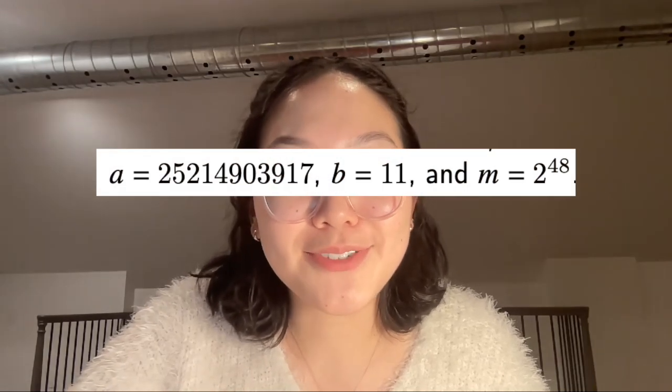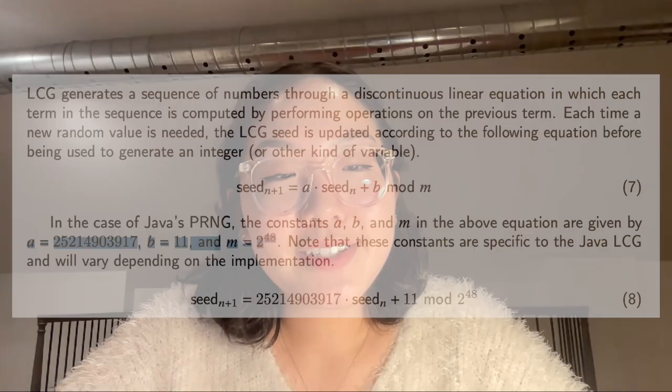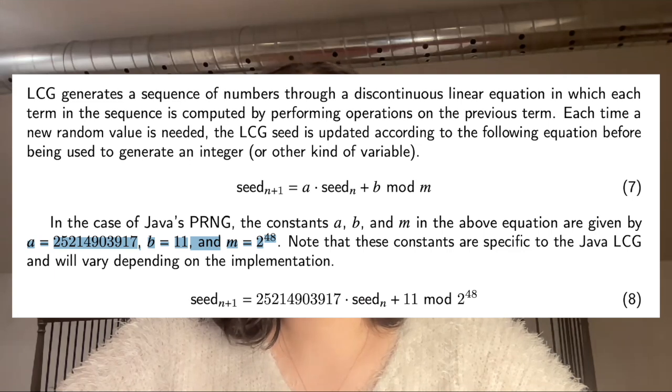Linear congruential generators are fast and memory efficient, but as we saw, one limitation is periodicity — the sequence of numbers is going to repeat itself. In our demo I purposely chose small numbers, but in the real world you're probably going to choose much larger values for the constants so that the periods are larger, meaning the repeating sequence is much longer. And you might choose some numbers like this. So where did I pull these numbers from? Minecraft. Nearly all of Minecraft's randomization is computed through Java's pseudo-random number generator, which utilizes a linear congruential generator.